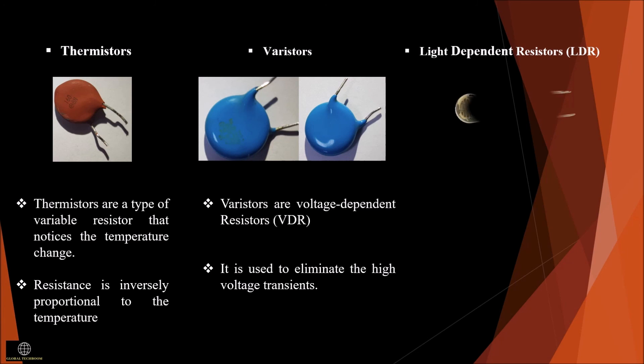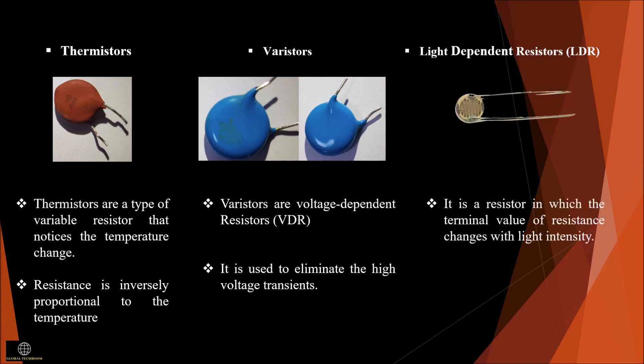Light dependent resistors, or LDR, are resistors in which the terminal value of resistance changes with light intensity. They are also called photoresistors or photoconductive cells. When light falls on the LDR, the quantity of light energy is inversely proportional to the semiconductor material, which reduces the resistance of the semiconductor material. This means photoresistors have a negative temperature coefficient.